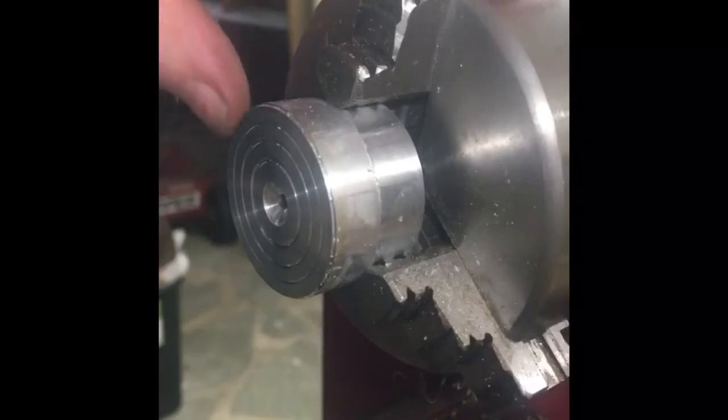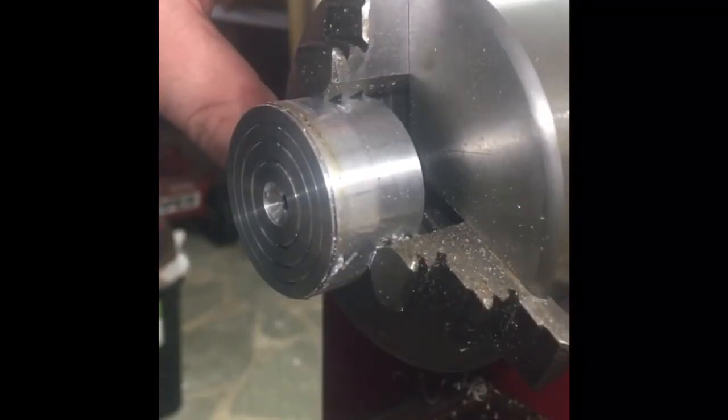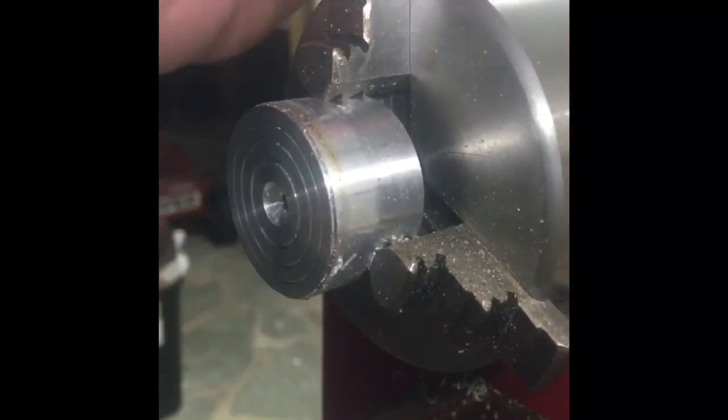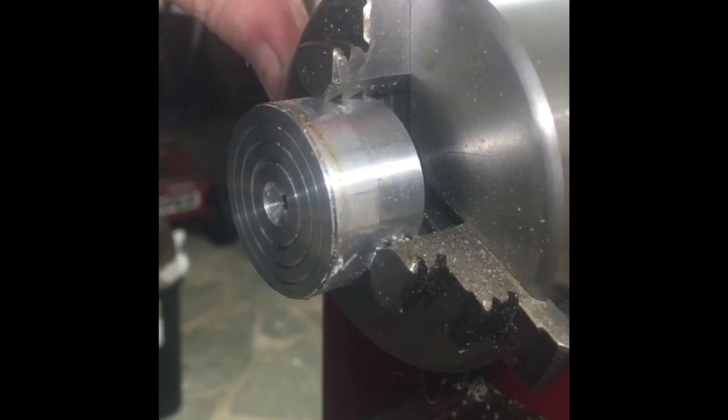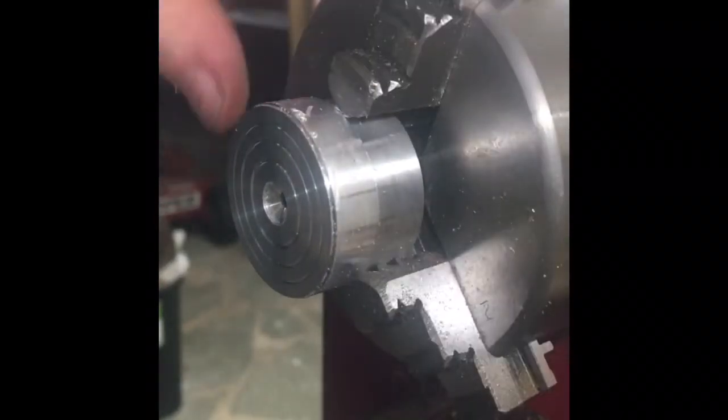What we'll do here is attach the blank and finish the outside diameter, drill it, and bore it to fit onto the mandrel.